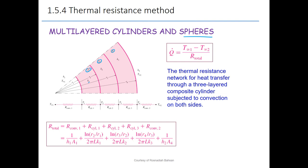Inside the pipe, we have moving steam — that is convection — so we have H1 and T_ambient1 inside the cylinder. We have R1 for the pipe, R2 for insulator number 1, R3 for insulator number 2, and R4 for insulator number 3. Outside the pipe, we consider the combined effect of convection and radiation with convection heat transfer coefficient H2 and T_ambient2.